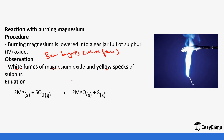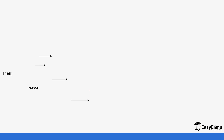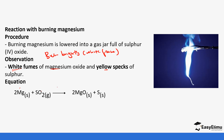What happens is that magnesium takes the oxygen from sulfur dioxide, so sulfur is reduced to form sulfur. Magnesium undergoes oxidation and sulfur dioxide undergoes reduction, as we defined in Form 1. So magnesium is gaining oxygen and sulfur dioxide is losing oxygen.